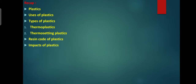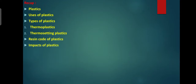Thermoplastics — polythene is an example. It is used for making polythene carry bags which are commonly used. Plastics which can be easily softened and bent when heated are known as thermoplastics. These plastics can be modified and returned into another plastic item through the process of recycling.